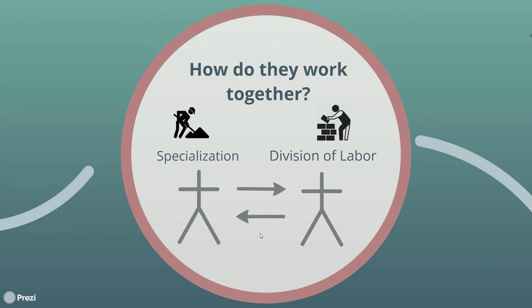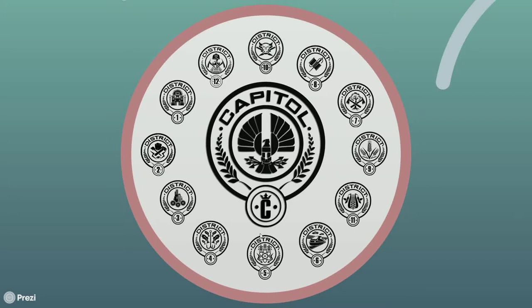So how exactly do these concepts play into The Hunger Games? Well, Panem, which is The Hunger Games' nation, is divided into 13 different districts. Each one produces a different type of good.